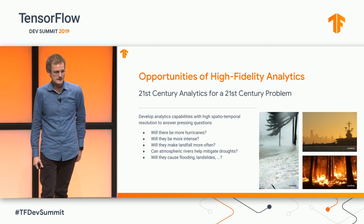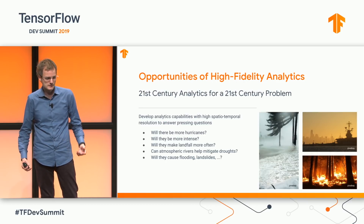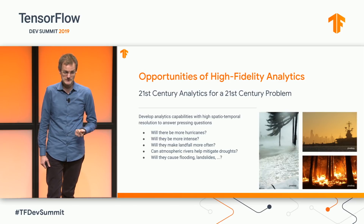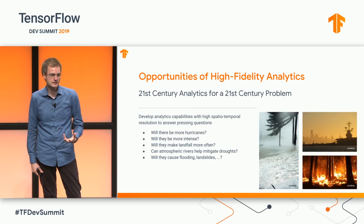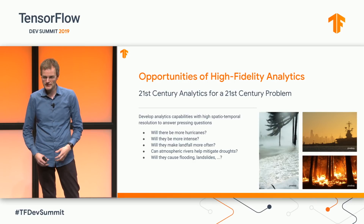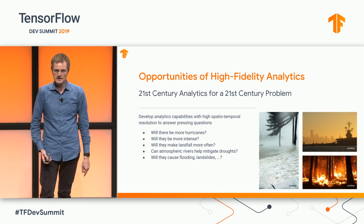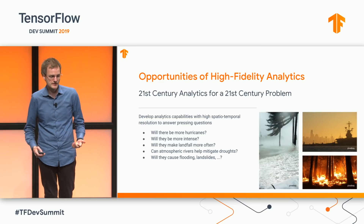We want to answer questions like: will there be more hurricanes? Will they be more intense? Will they make more landfalls? If they stay over the sea it's usually not as bad as when they hit the coastline. For atmospheric rivers, 50% of all rain in California is due to them — so it's an important question whether we'll get more. This also relates to forest fires. Insurance industries, water planners, and many others need to know what they need to gear up for.